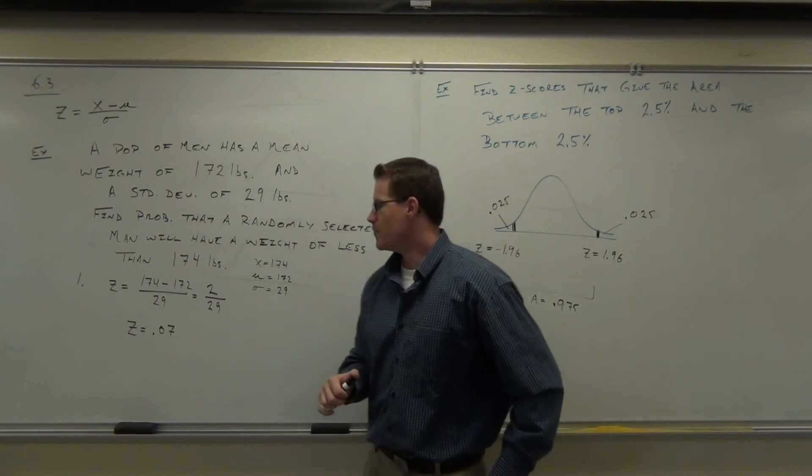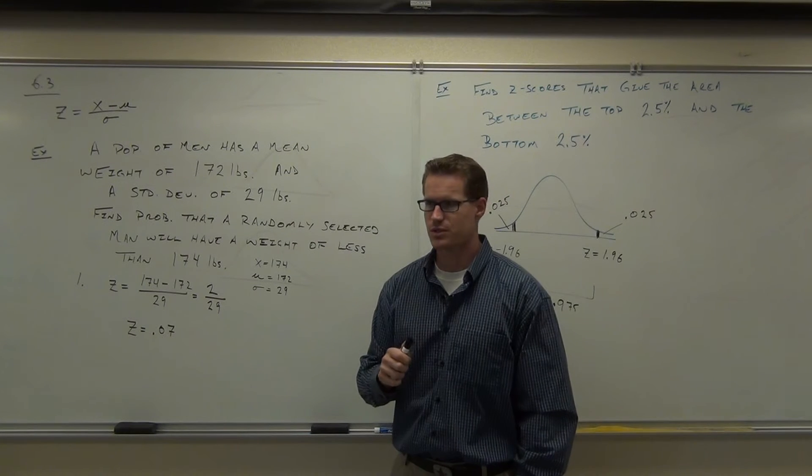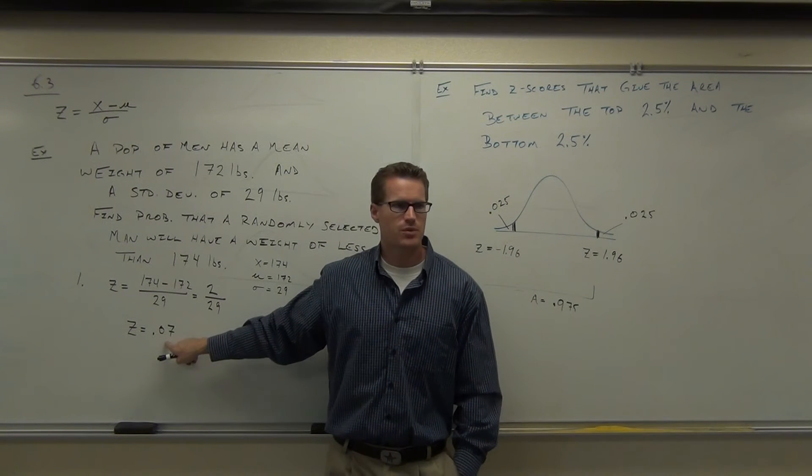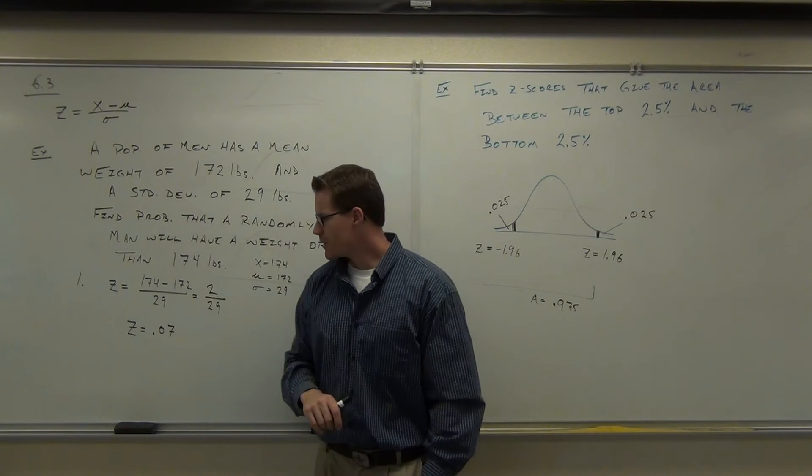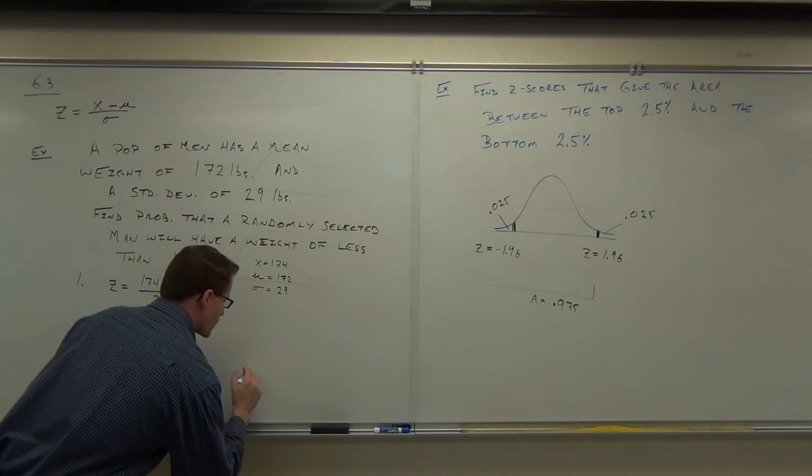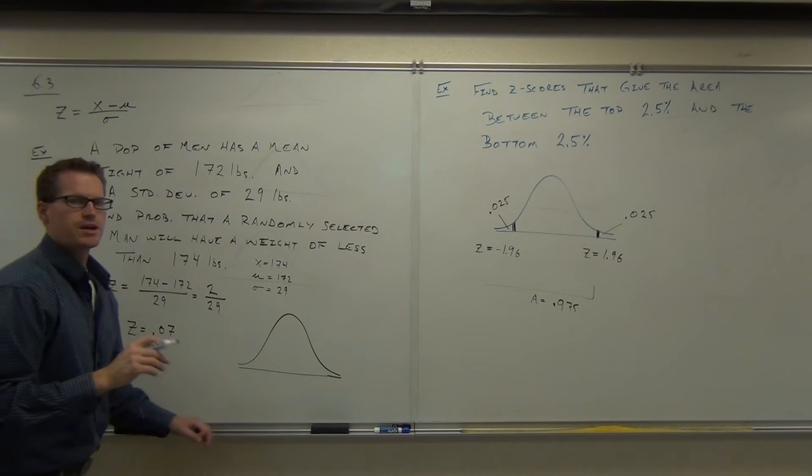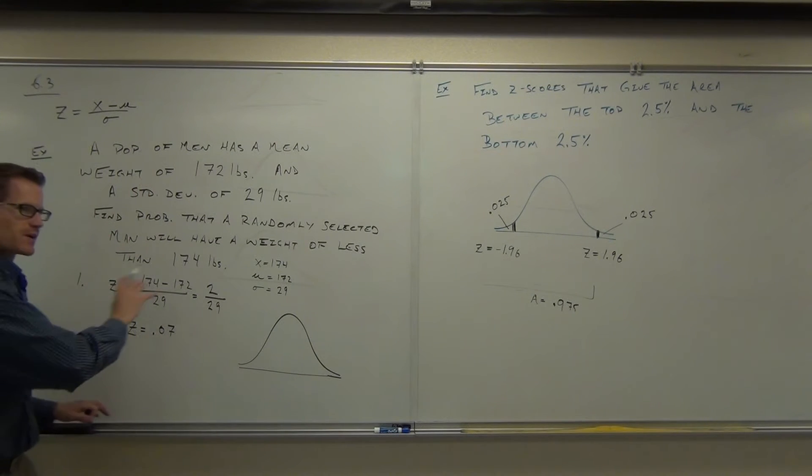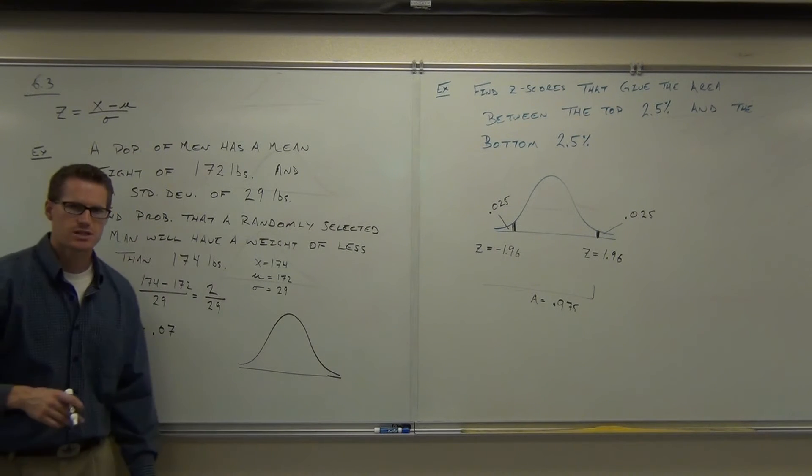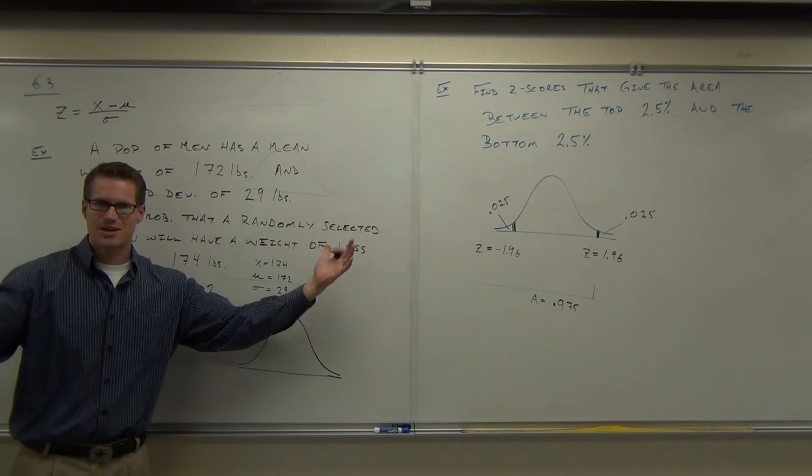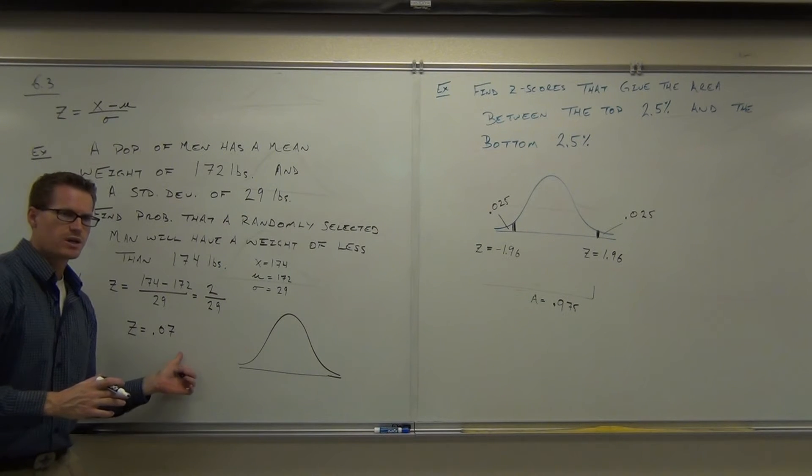If you have a z-score of 0.07, does this mean that you have a 7% chance of doing that? Is that what that means? No. You actually have to put this on your graph. What you found is a distance from the mean. This is the number of standard deviations away from the mean.